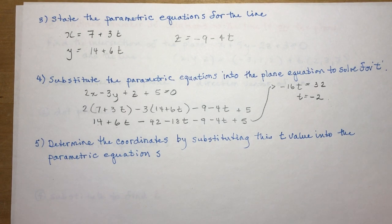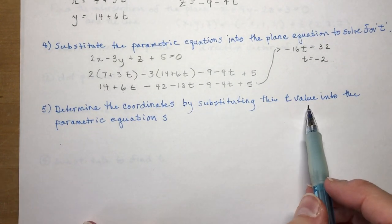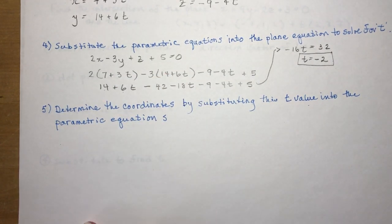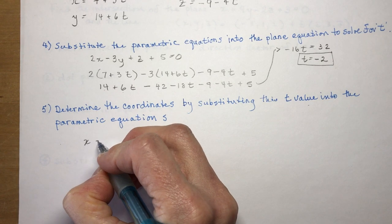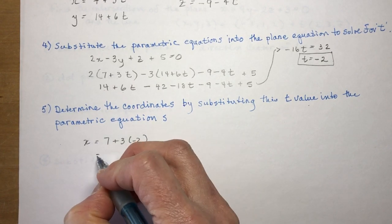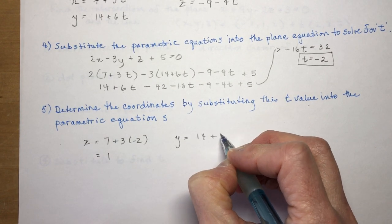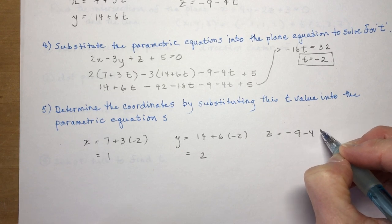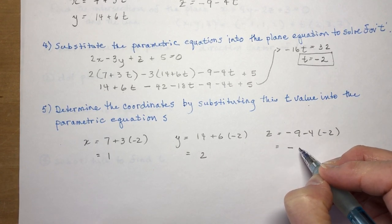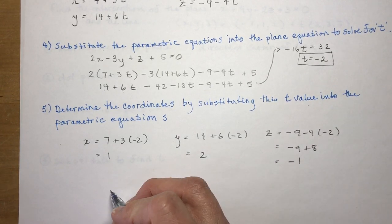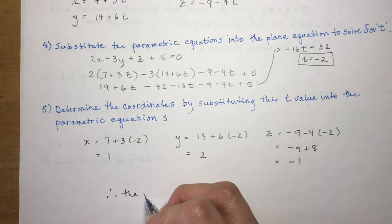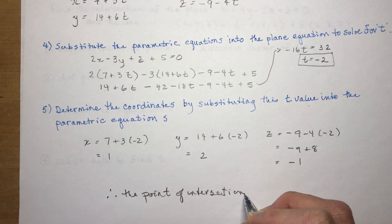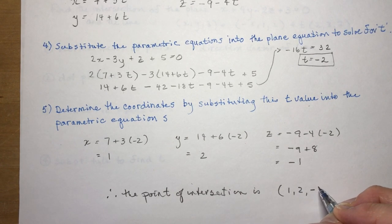Now I substitute t equals negative 2 back into the parametric equations to find the coordinates. x equals 7 plus 3 times (minus 2), which gives 1. y equals 14 plus 6 times (minus 2), which gives 2. z equals minus 9 minus 4 times (minus 2), which is minus 9 plus 8, giving negative 1. Therefore, the point of intersection is (1, 2, -1).